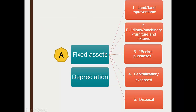For fixed assets, we think about several elements: land and land improvements, buildings, machinery, furniture, and fixtures. When we purchase fixed assets, we may do what's called a basket purchase. Another key question is whether to capitalize something as an asset or expense it — sometimes you expense things on an asset or create extra value for it. Finally, we consider what to do when we sell an asset.